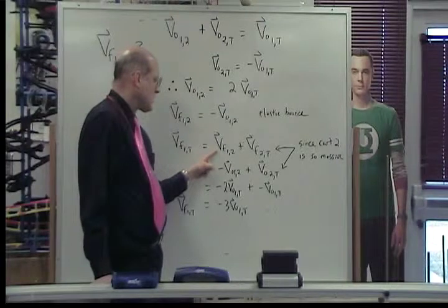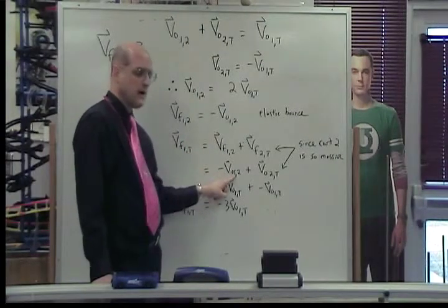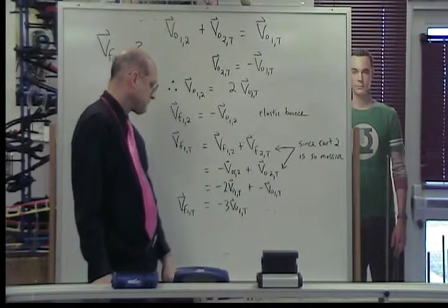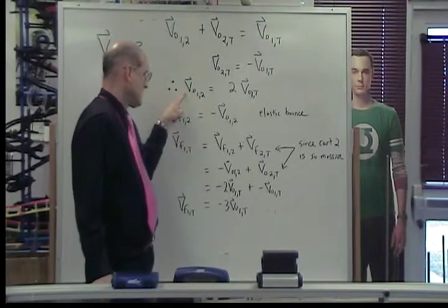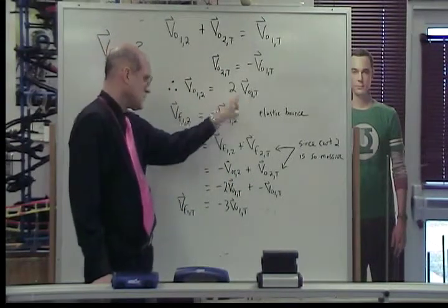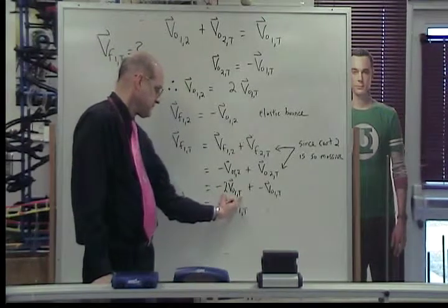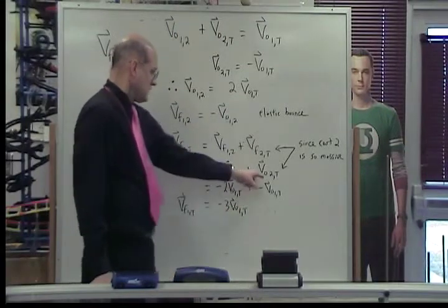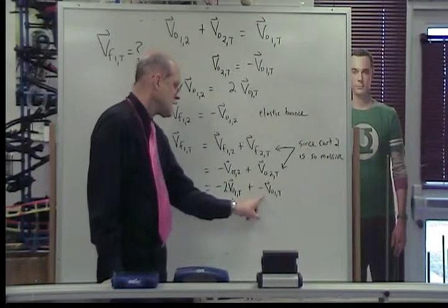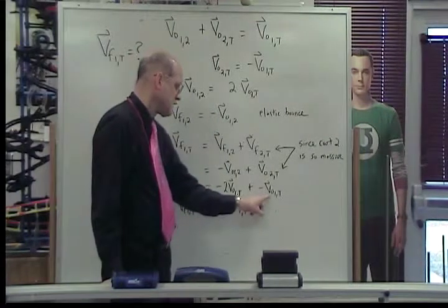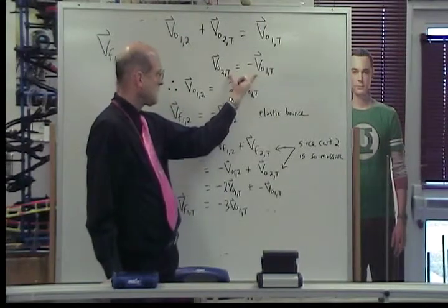The final velocity of card 1 relative to the track we saw earlier is equal to the negative of the original velocity of card 1 relative to 2, which we saw up here is equal to twice the original velocity of card 1 relative to the track. So this term becomes this. The original velocity of card 2 relative to the track is equal to the opposite of the original velocity of card 1 relative to the track, and we stated that up here earlier on.